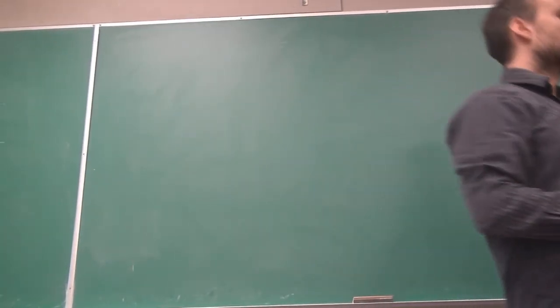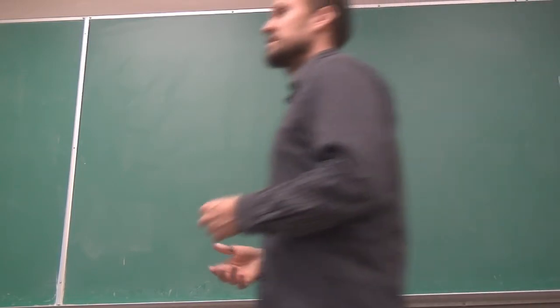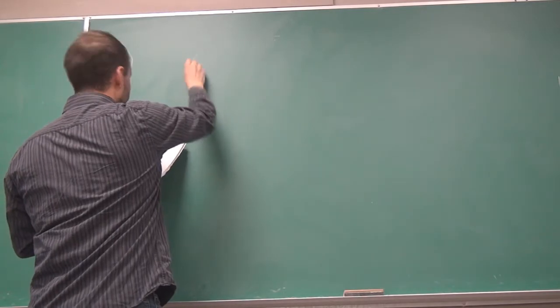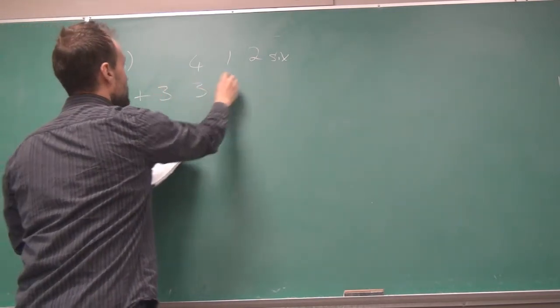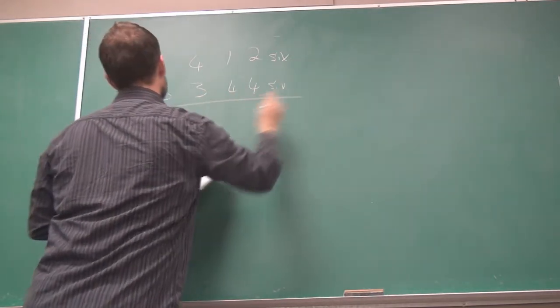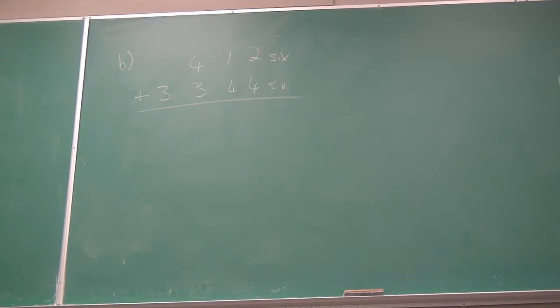A student asks: would you ever add a base 6 number to a base 9 number? No — then you'd have to convert, which is what we're trying to avoid. So all numbers in an addition problem will share the same base. Part B: 4126 base 6 plus 3344 base 6.